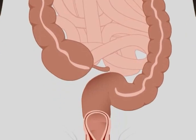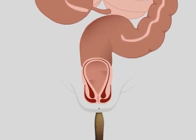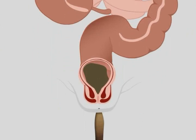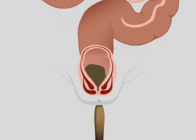Defecation results from the chyme or feces moving by peristalsis to the rectum, causing its walls to stretch. This triggers the defecation reflex. There are two sphincter muscles in the anal canal. The defecation reflex causes the first sphincter muscle to open, allowing feces to enter the anal canal. The second sphincter, made of skeletal muscle, is under voluntary control and can remain closed.